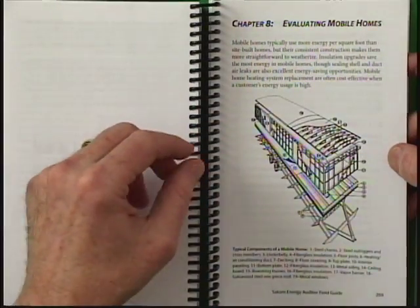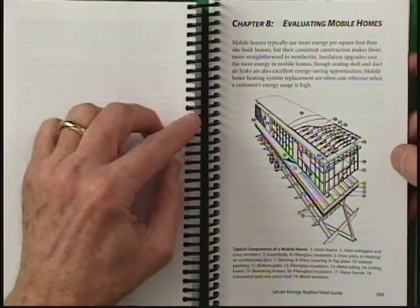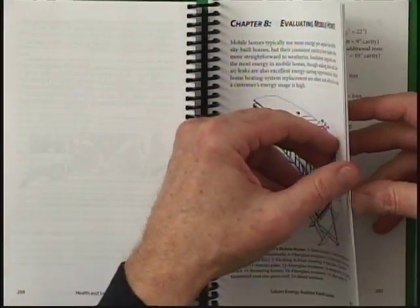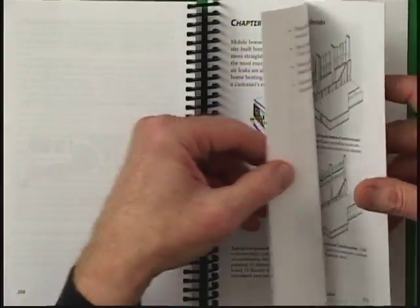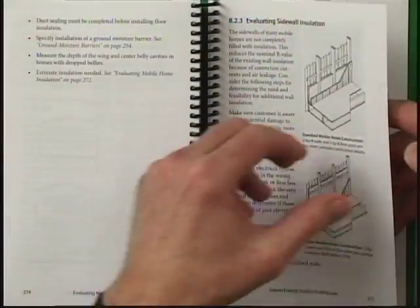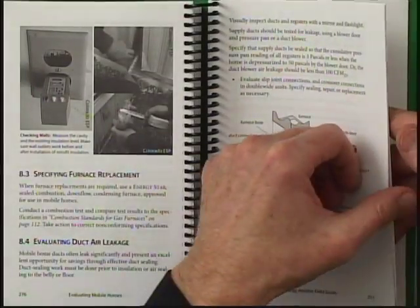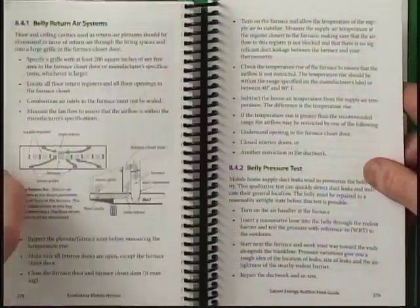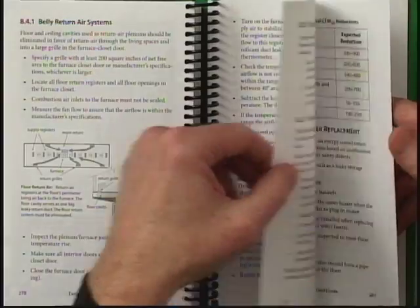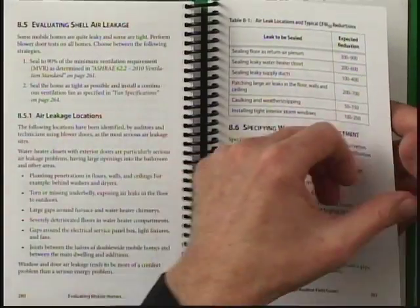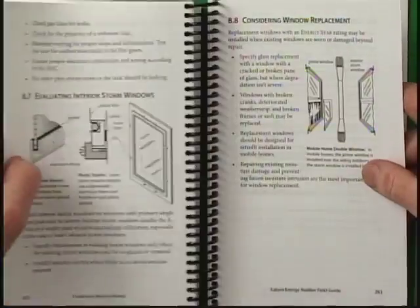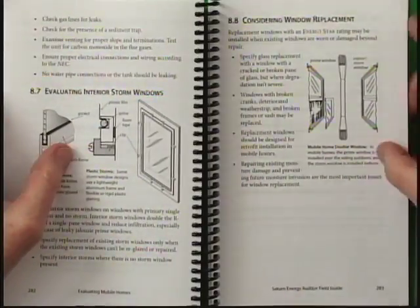Then we have a chapter on mobile homes and how to audit mobile homes — what to look for, what is possible in terms of insulation, air sealing, and heating and cooling systems.